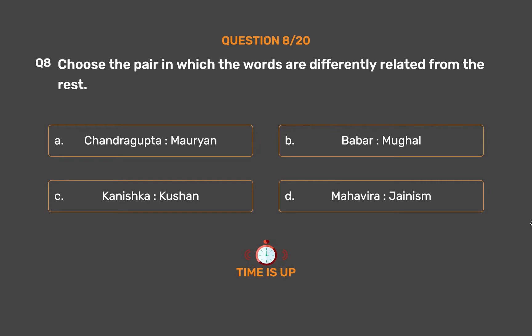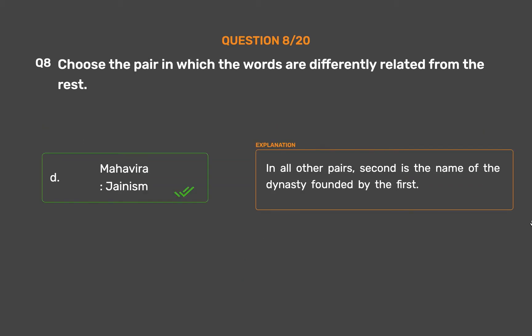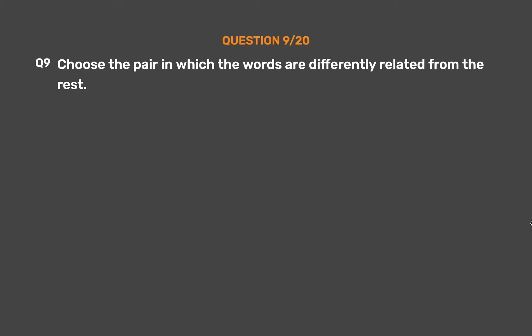The correct answer is Option D: Mahavira, Jainism. In all other pairs, the second is the name of the dynasty founded by the first.